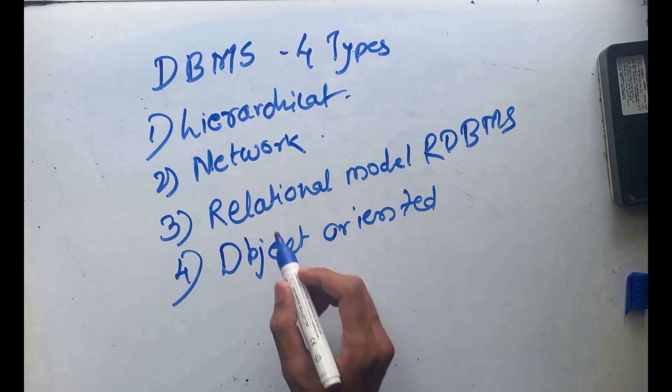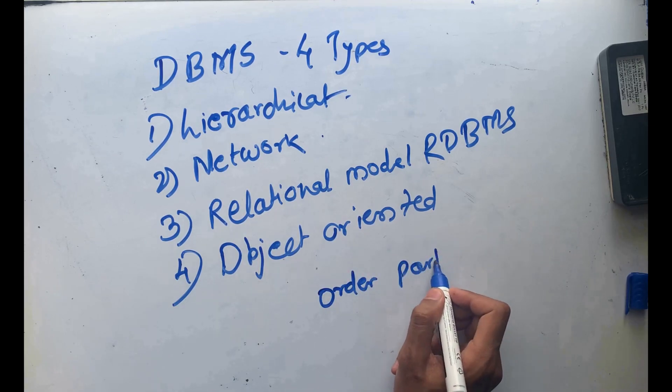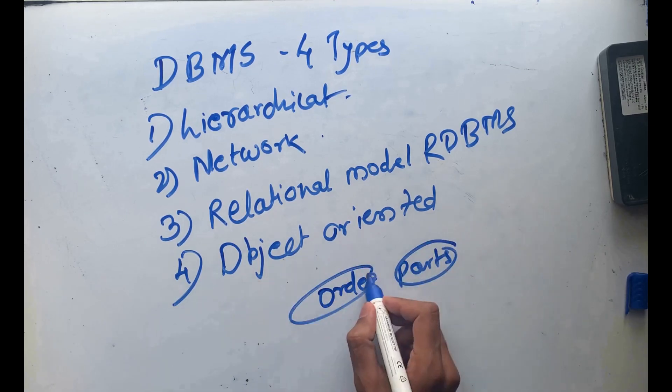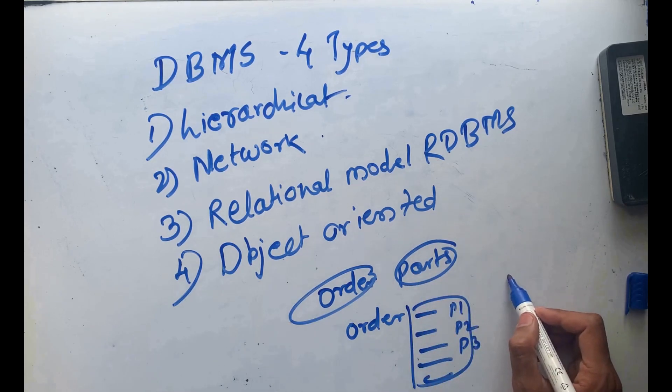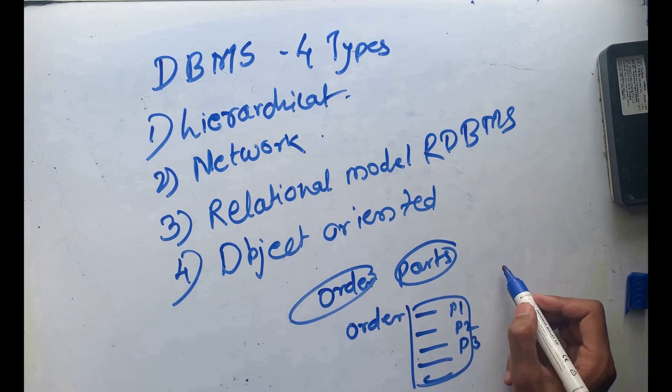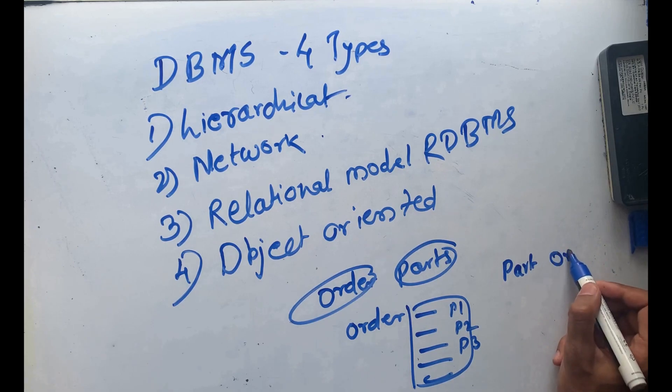Third one - there is order and parts as two entities. When we are placing an order which contains multiple parts, this is the relationship: part one, part two, part three. In the reverse direction, there is a part which is available in order one, order two, order three, order four, something like that.